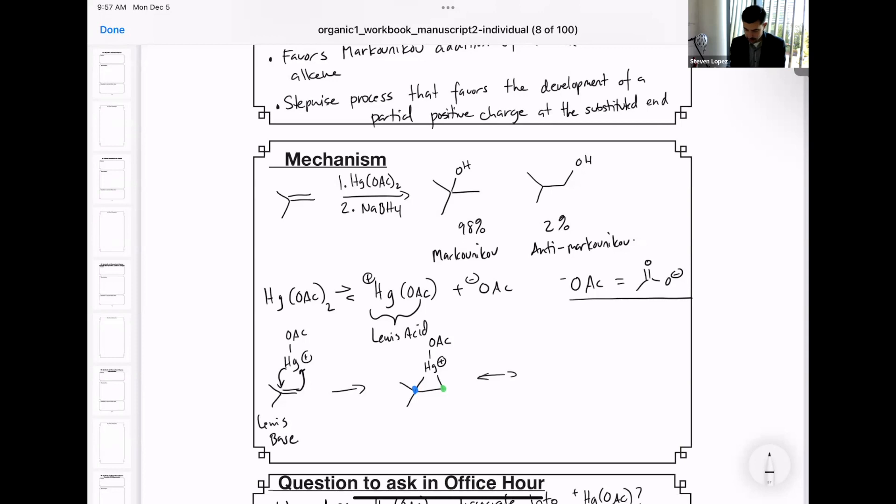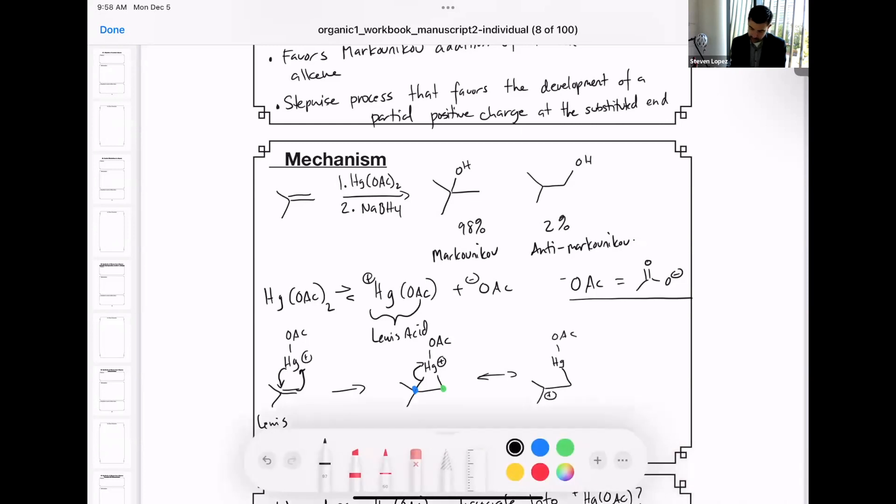So if we draw a resonance structure that breaks this bond, this carbon-mercury bond, then you have a structure that looks like this, right? Or if you break this carbon-mercury bond, then you get a structure that looks like this.